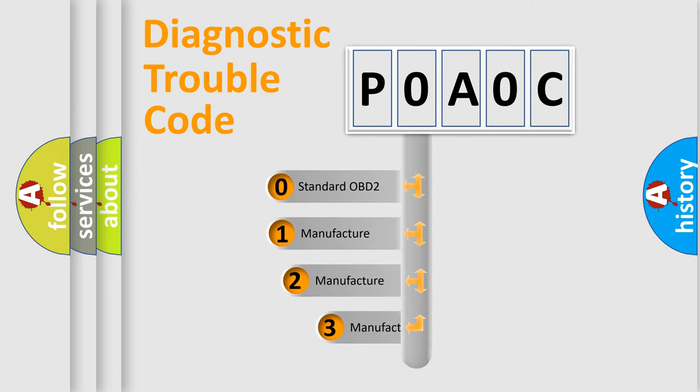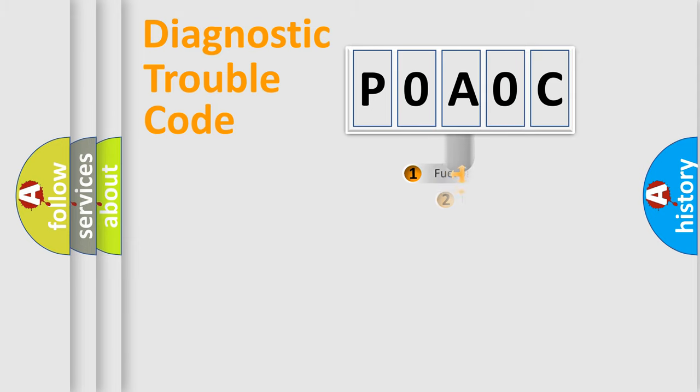If the second character is expressed as zero, it is a standardized error. In the case of numbers 1, 2, or 3, it is a more prestigious expression of the car-specific error.